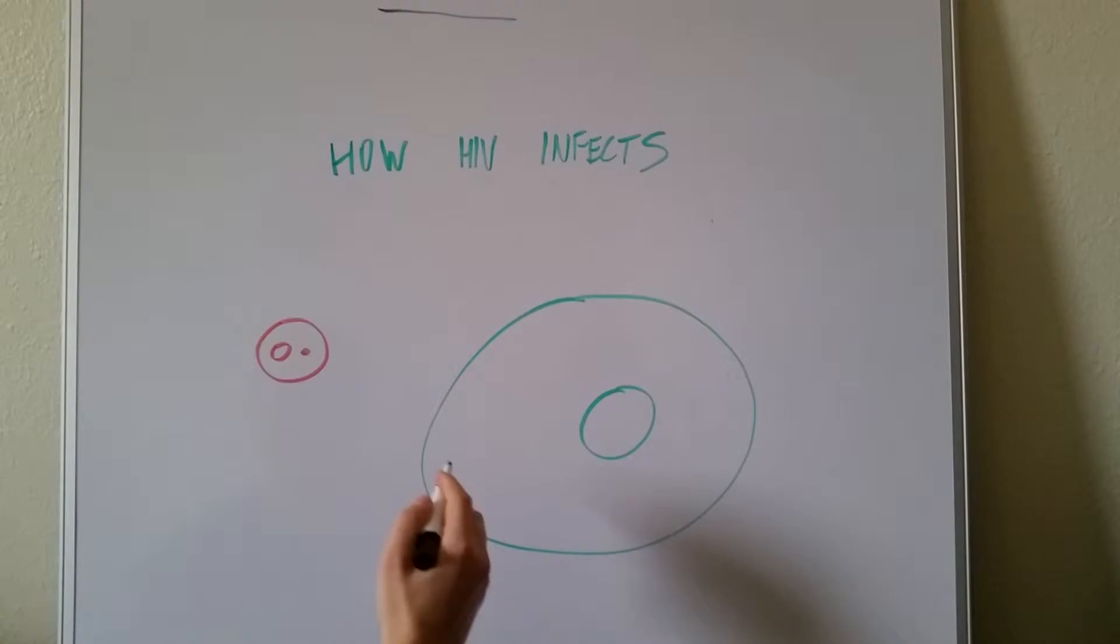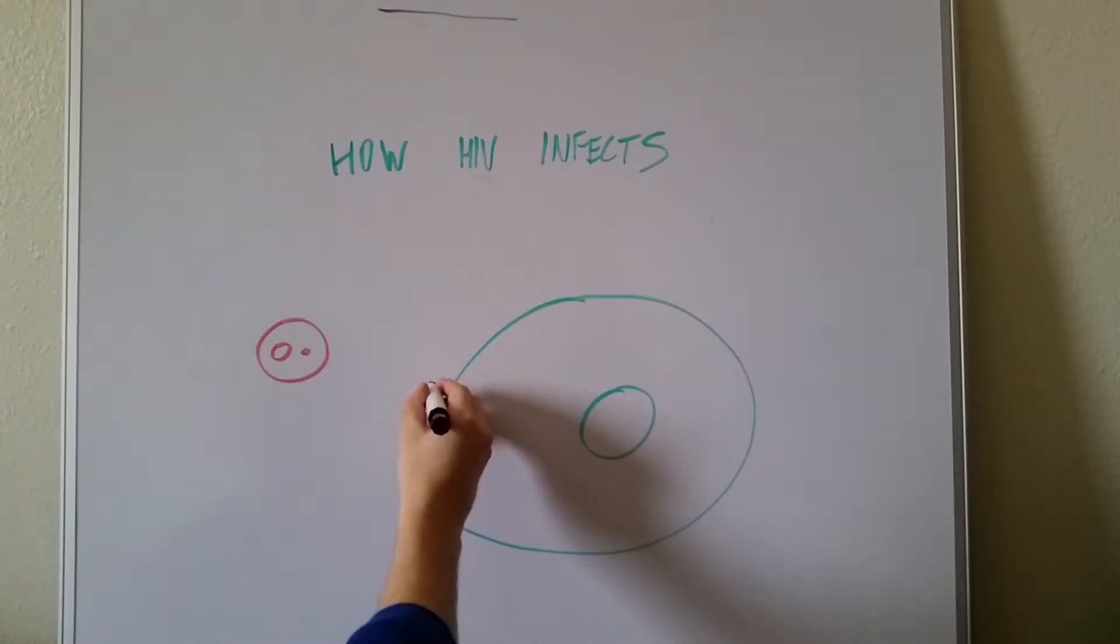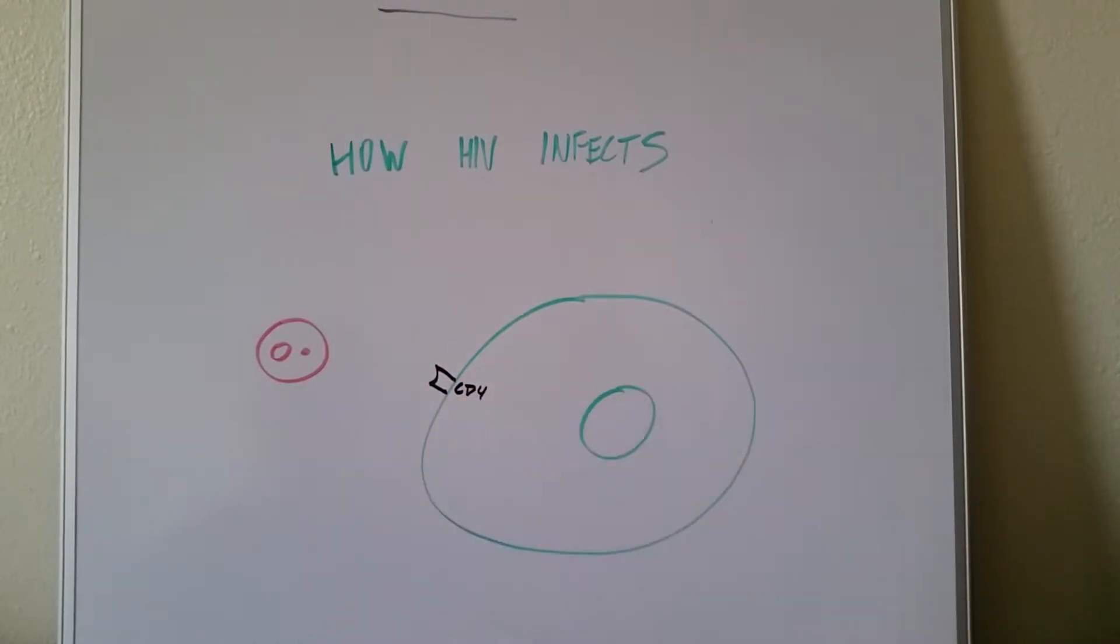Well, this T cell, like we said, might be CD4 positive. And what does that mean? It just means it has a receptor here that's called a CD4 receptor. So since it has that, it's CD4 positive. If this cell didn't have that receptor there, then it would be CD4 negative. So that's why CD4 positive cells are ones that get infected.